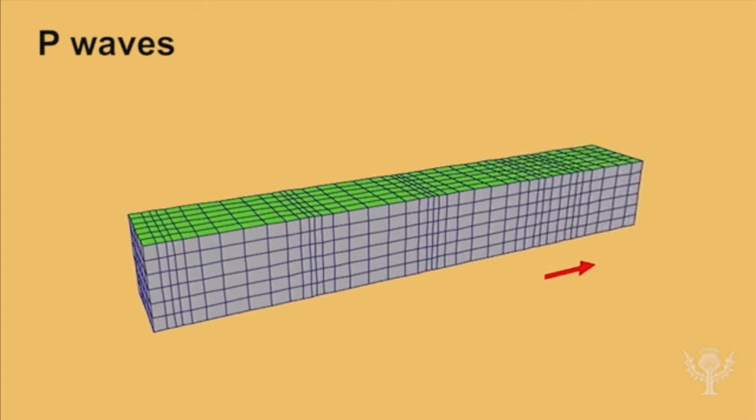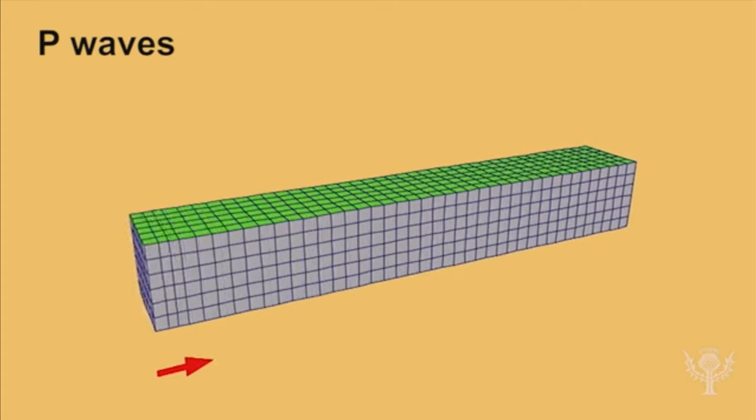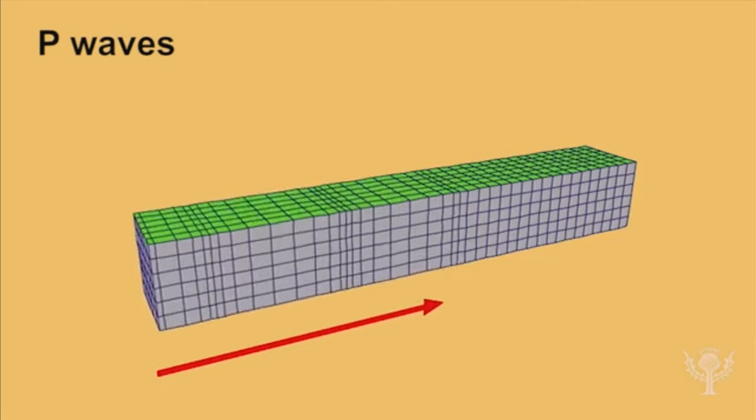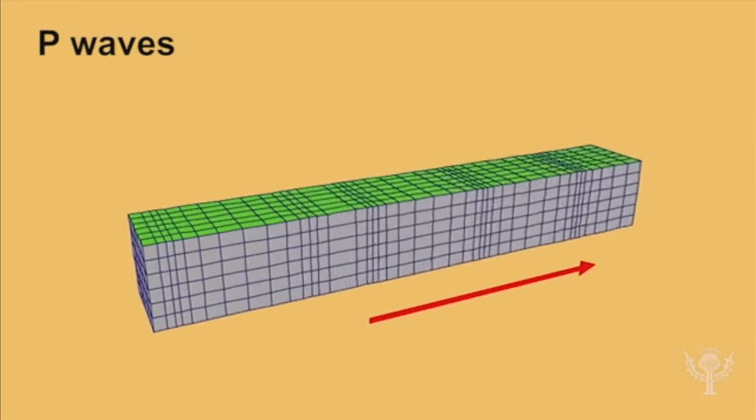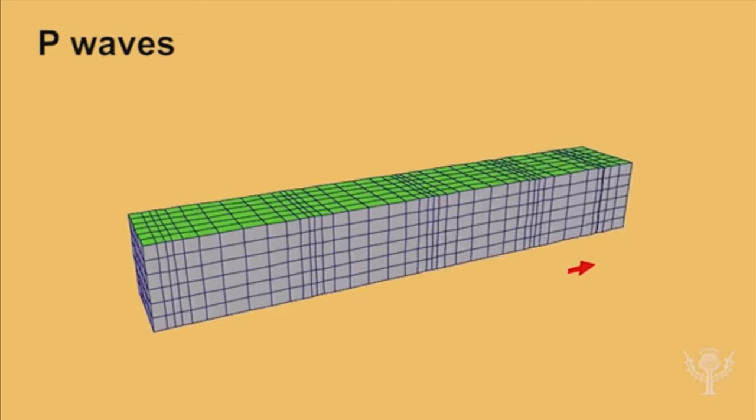They are called primary waves because they are the first type of wave to arrive at seismic recording stations. P waves can travel through solids, liquids and even gases.